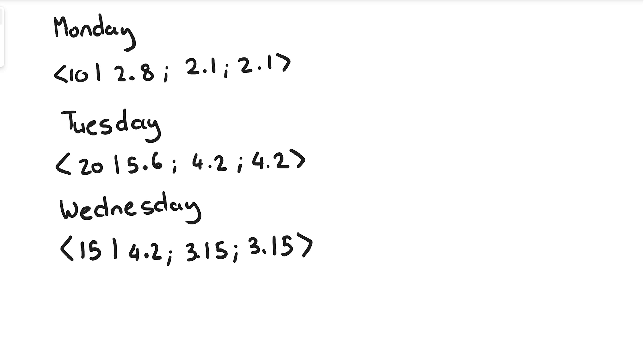So basically, an input of 10 should give you an output of 2.8, 2.1, and 2.1. An input of 20 should give you an output of 5.6, 4.2, and 4.2.